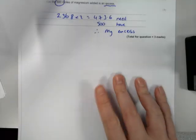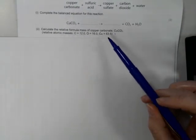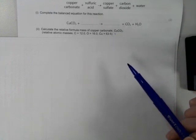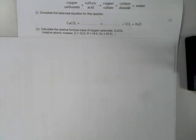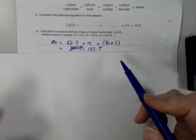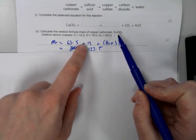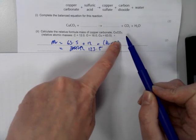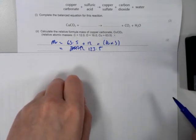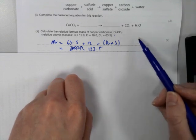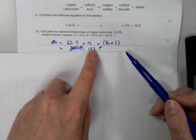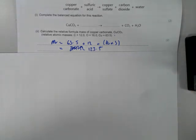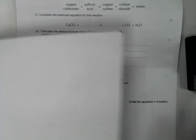That's percentage by mass. The next one is relative formula mass — calculate the relative formula mass of copper carbonate. You have one copper (63.5), one carbon (12), and three oxygens (16 × 3). Add all of that together, and my formula mass is 123.5. You get a mark for showing your working and then a mark for your final answer.